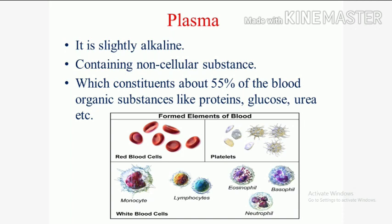Plasma contains about 55% of the blood. Organic substances like protein, glucose, urea, enzymes, hormones, vitamins, and minerals are present in the plasma.